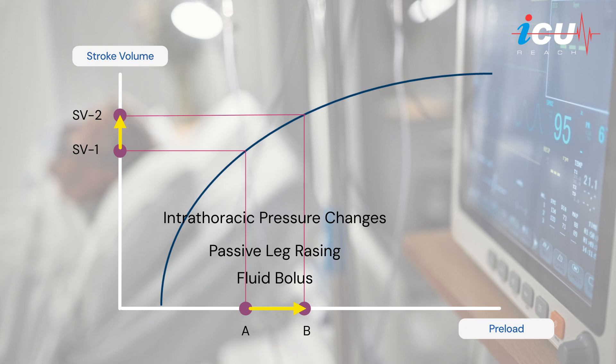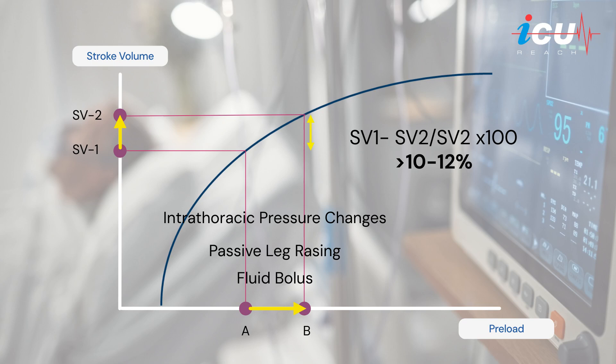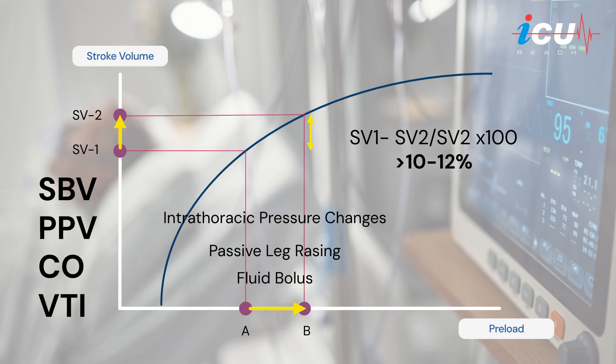In mechanically ventilated patients, preload increases during expiration compared to inspiration. Whichever method you use, fluid responsiveness is indicated if stroke volume increases by more than 10 to 12%, provided that the patient has a regular rhythm. You can also assess parameters like systolic blood pressure variation, pulse pressure variation, changes in cardiac output, or velocity time integral (VTI).